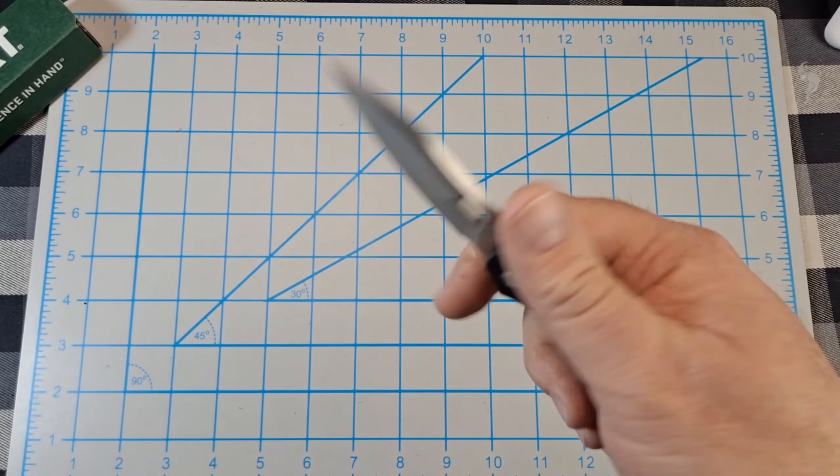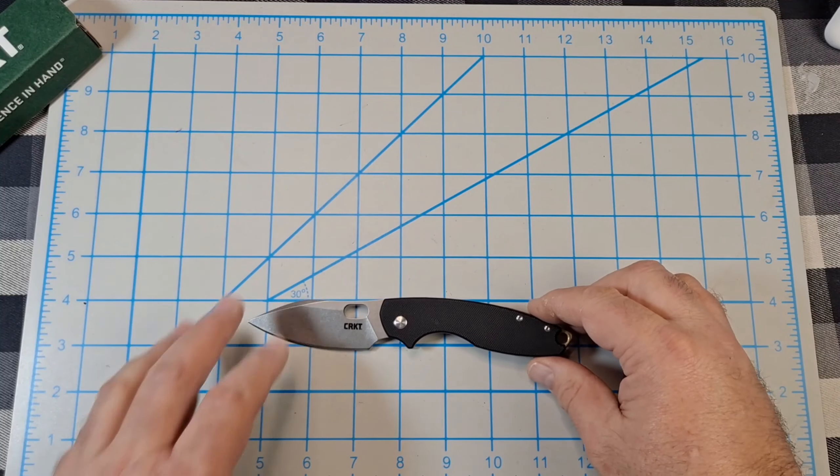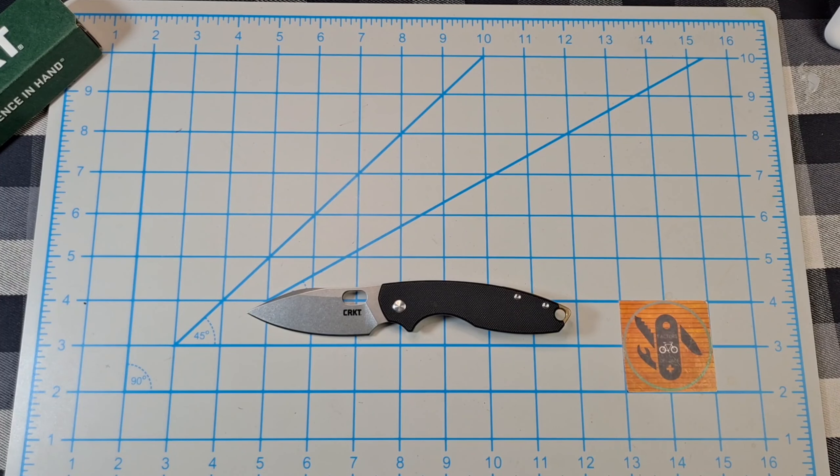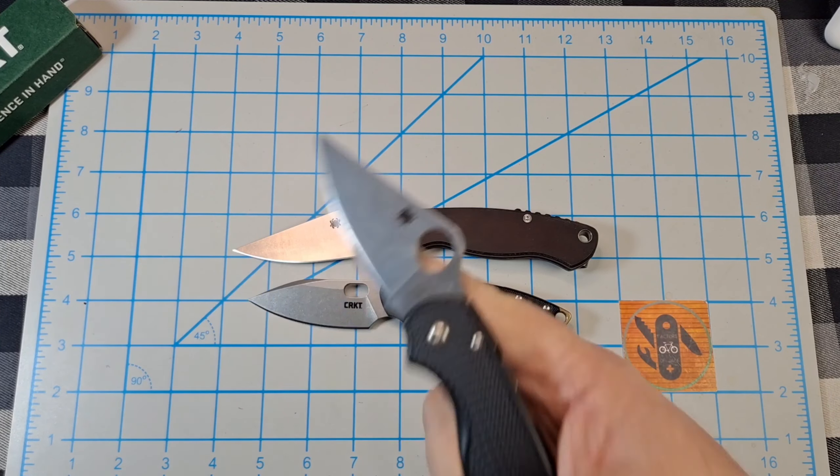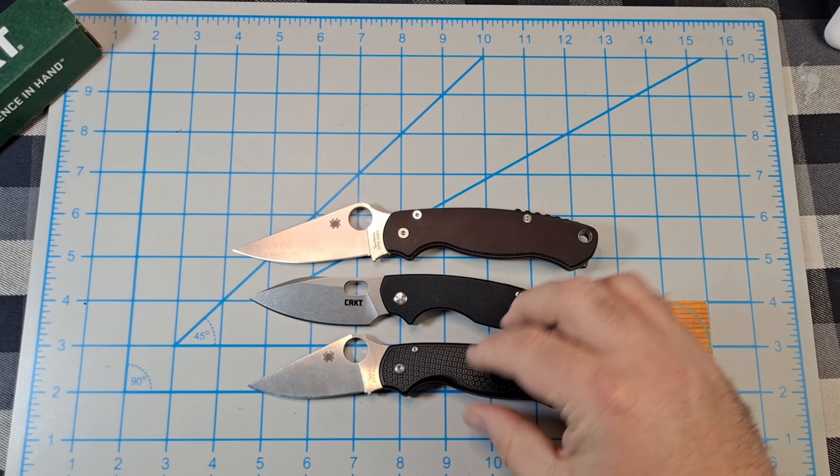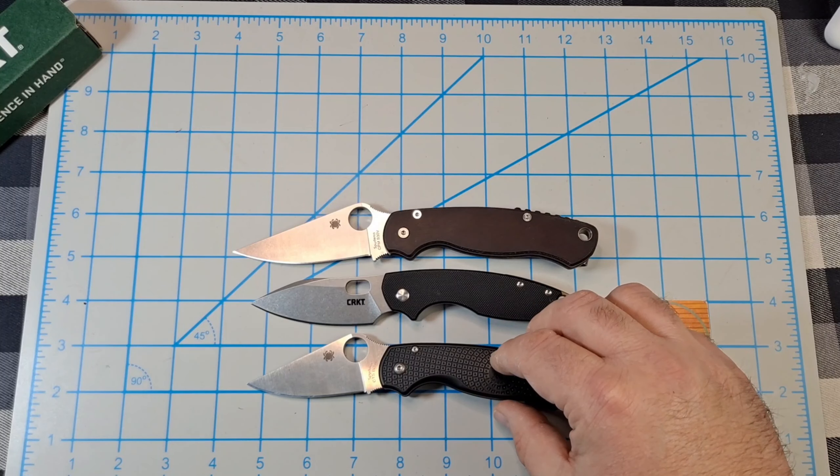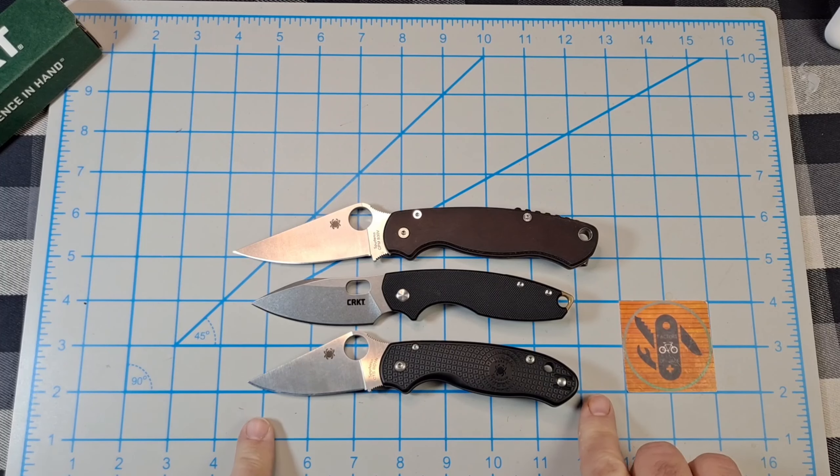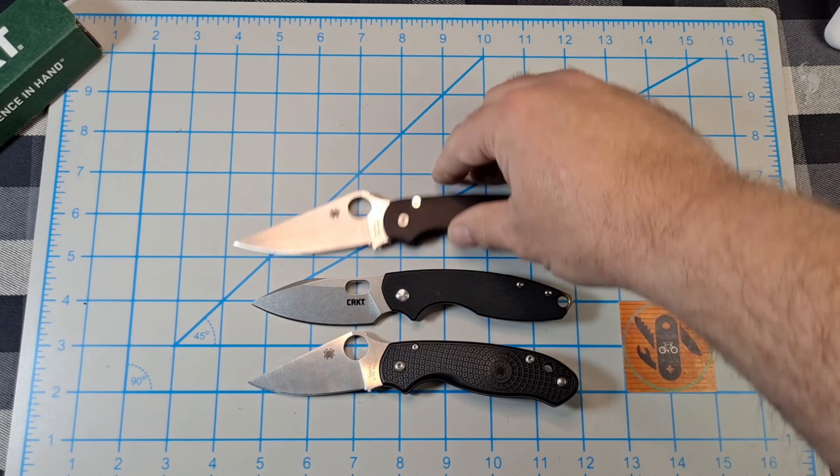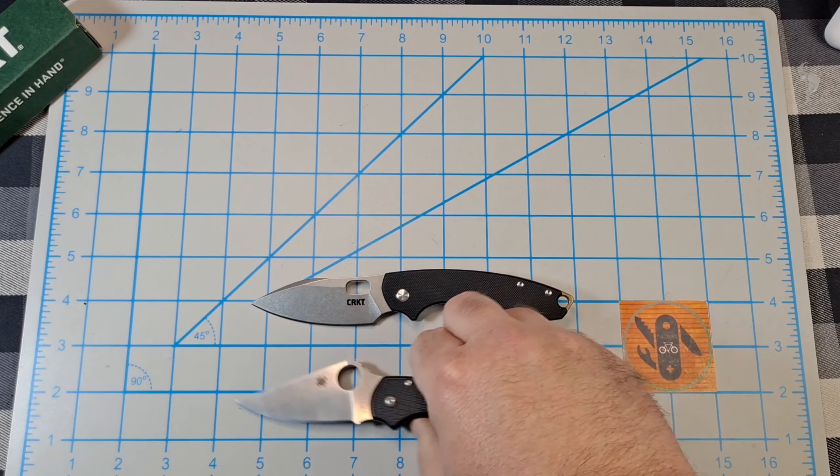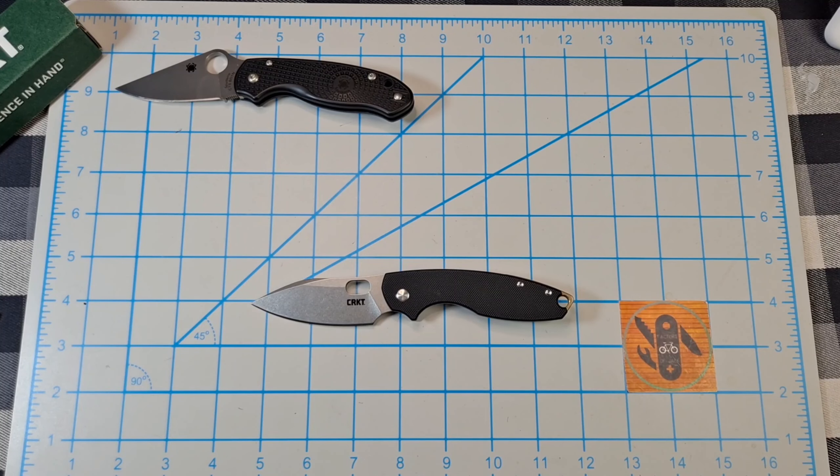I know there's a lot of good about this. Let me do some size comparisons. Got the usual ones - the Paramilitary 2 and the Para 3 Lightweight. So definitely a lot smaller than the PM2. The Para 3, that's pretty close. Yeah, I'm surprised how close they are. That's a good example.